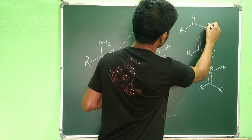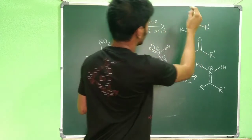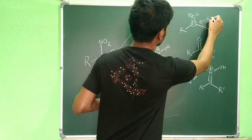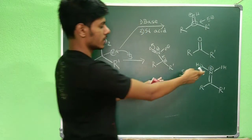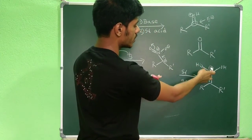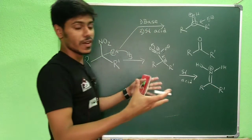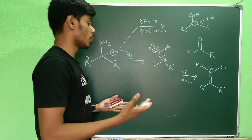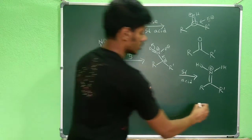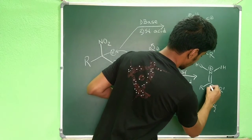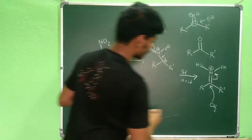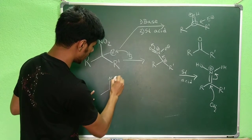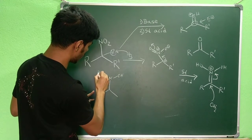You can see this intermediate: just like a protonated carbonyl where the carbon becomes very electrophilic, here the nitrogen carries a positive charge making this carbon center very electrophilic. Since you are using acid there is water in the reaction medium, and that water molecule can attack at this center.